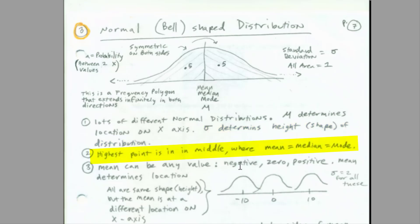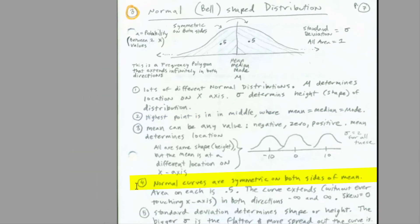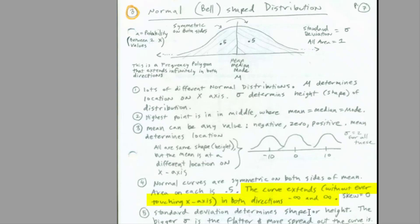The highest point in the middle is where the mean equals median equals mode — that's part of the definition of a Bell or normal curve. Normal curves are symmetric on both sides, and the curve extends without ever touching the x-axis in both directions to negative infinity and positive infinity. When you get past three standard deviations, it becomes really unlikely, even though theoretically it goes in both directions.